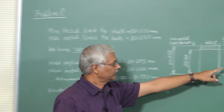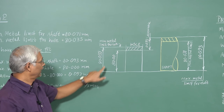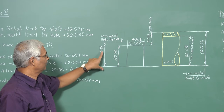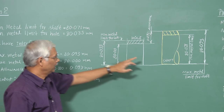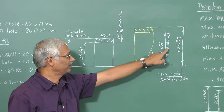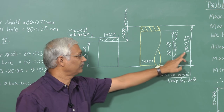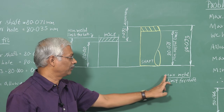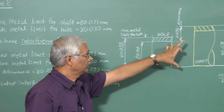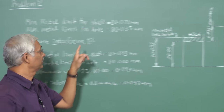The minimum size of the hole is 80mm and the maximum size is 80.035mm. The minimum metal limit for the hole is 80.071mm and the maximum metal limit corresponds to 80.093mm for the shaft. Since the minimum size of the shaft is greater than the maximum size of the hole, we have an interference fit.